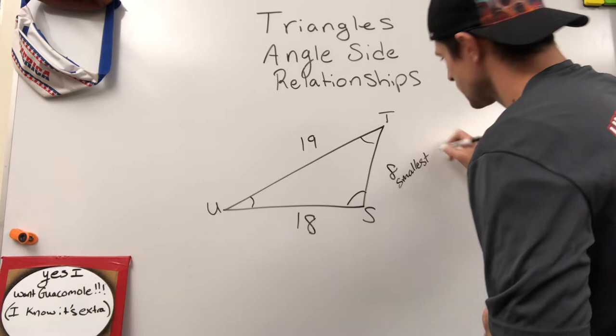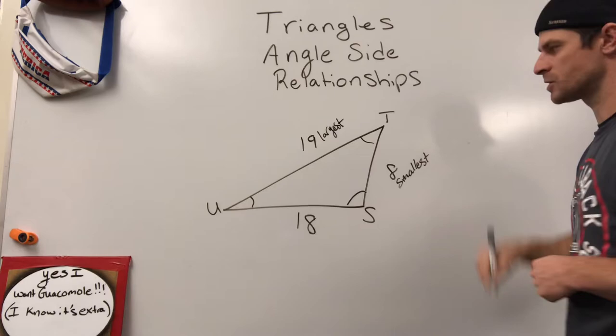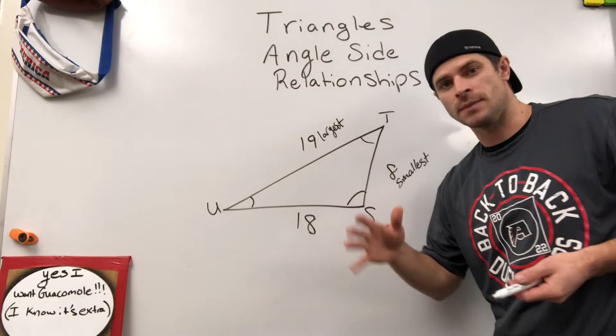So 8 is obviously our smallest value. 19 being our largest value. Good mathematicians would just put some words there to make sure that that's nice and clear. Makes it easy for us to find it. 18 is kind of in the middle, so I'll just use the word middle for that.